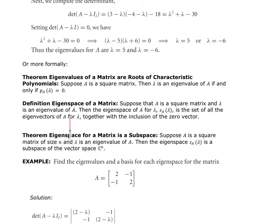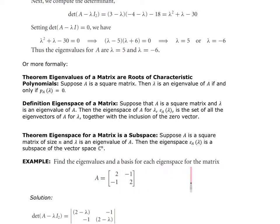The eigenspace of A for lambda, denoted E_A(lambda), is the set of all eigenvectors of A for lambda together with the zero vector. This eigenspace is a subspace of Cⁿ. Now let's find eigenvalues and a basis for each eigenspace — a basis must be linearly independent and span the set.